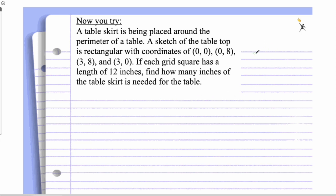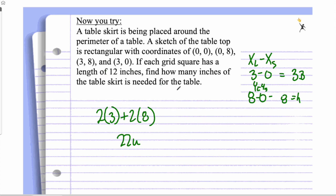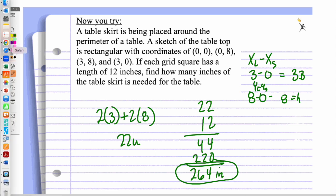So let's take our same process. So we take our x large minus x small, so 3 minus 0, gives me a base of 3. And then I take 8 minus 0, and that gives me my y large minus y small, gives me 8 for my height. So 2 times 3 plus 2 times 8 gives me 22 units. And this time, each unit stands for 12 inches, so 12 times 22 gives me 44 at 0, 220, 264, in this case, inches needed to go ahead and go around the table. So I need a pretty long table skirt to make it around this table.